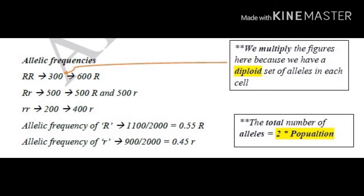Let's continue. We've got RR — we have 300 RRs, therefore we've got 600 R alleles. We've got 500 R small r, therefore we've got 500 R alleles and 500 small r alleles. And then small r small r, present in 200 flowers, gives us 2 times 200, therefore 400 small r alleles. Wrapping it up: the allelic frequency of R is 1,100 (which is 600 plus 500), divided by 2,000, giving us 0.55. The allelic frequency of small r is 900 (500 plus 400) divided by 2,000, which is 0.45. It is always important to ensure the total is always 1.